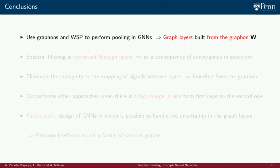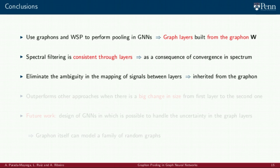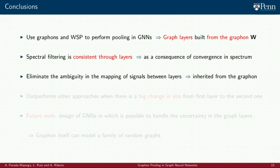We now conclude our talk highlighting how graphons and graphon signal processing can be used to perform pooling in graph neural networks, building the graph layers from an underlying graphon. As a consequence of the fact that elements in the graph layers built from the graphon are a subsequence of a convergent sequence, we have spectral consistency through layers, which implies consistent filtering. In this context, we do have a natural way to associate the components of the signal when they are mapped between layers.